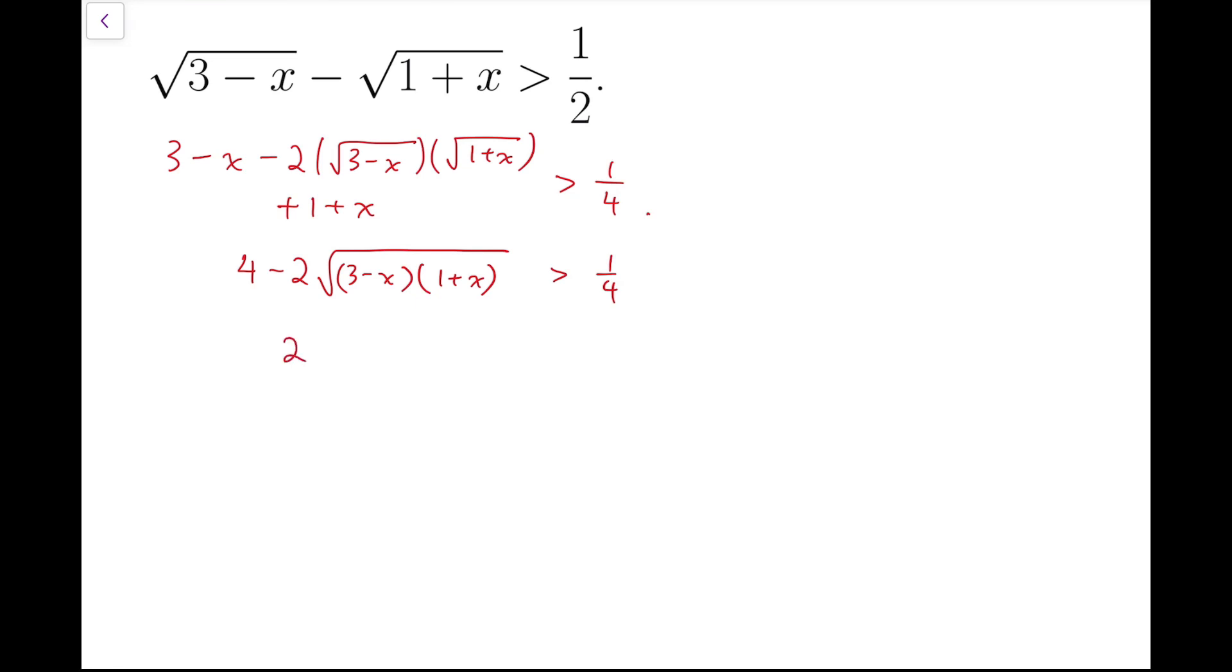Now we have 2 times the same square root to be smaller than 15 over 4, after moving the quarter to the other side and moving the square root to the other.